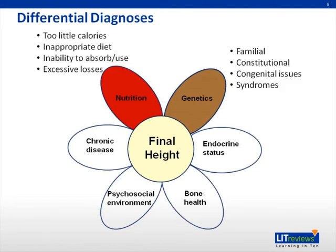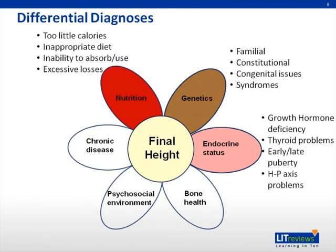Genetic factors to consider in a growth assessment include familial short stature, constitutional delay of growth, congenital problems, and genetic abnormalities. Endocrine factors include growth hormone deficiency or resistance, thyroid problems, abnormal puberty, adrenal problems, and other hypothalamic-pituitary axis problems.